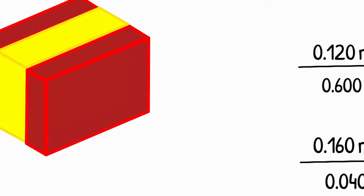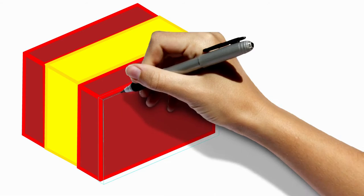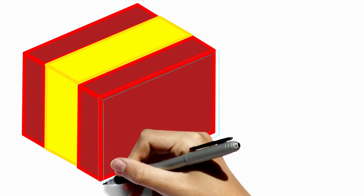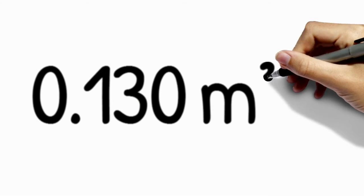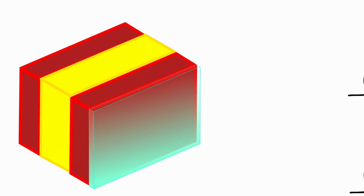We're almost there, but we still have to account for surface resistance, the added resistance of a thin layer of still air directly in front of our building element. On the interior, that adds 0.13 square meter times k over watt to the resistance.